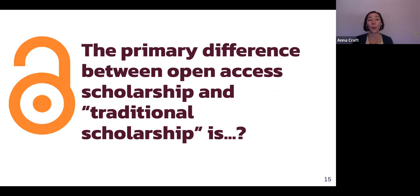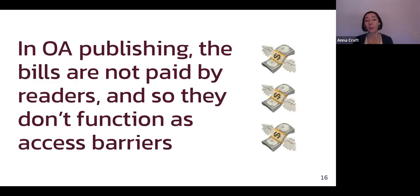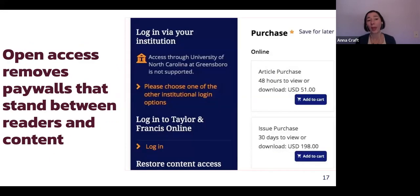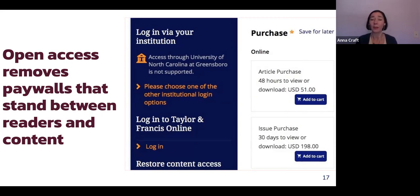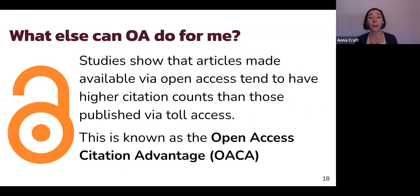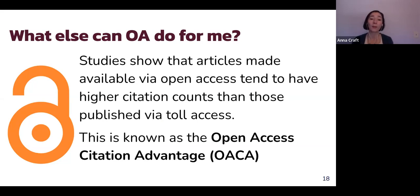The primary difference between open access and traditional or closed scholarship really comes down to money. The bills are not paid by readers in open scholarship, so they don't function as access barriers. Open access removes the paywalls that stand between readers and content. For example, recently I ran into a paywall where purchasing an article cost about $50 or an issue about $200 — this can really add up, and not all scholars can afford that. With open publishing, scholars don't run into these paywalls.